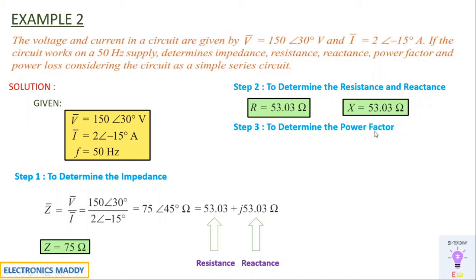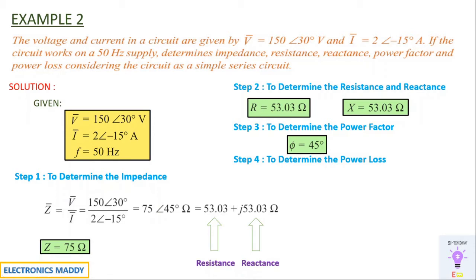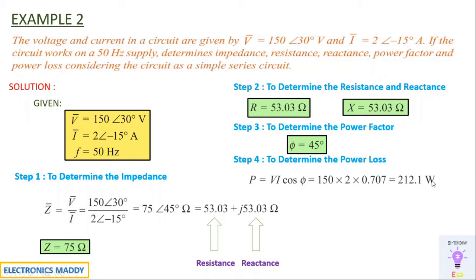Step four: determine power factor. cos φ = cos 45° = 1/√2 = 0.707 lagging (must always mention lagging for RL circuit). Step five: power loss is the same as power consumed, i.e., active power. P = VI cos φ. Substituting magnitudes of V and I along with cos φ = 0.707, you get 212.1 W.